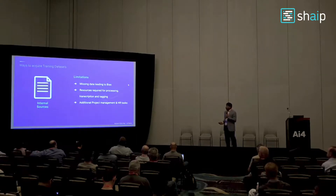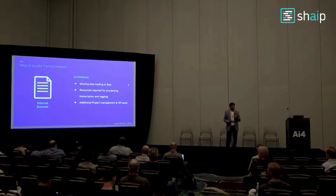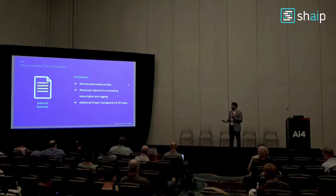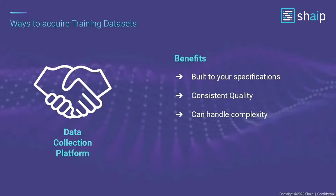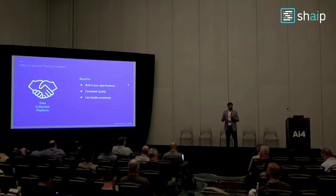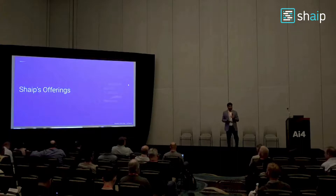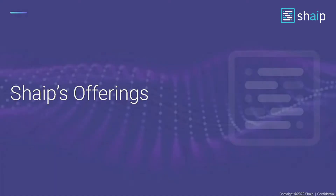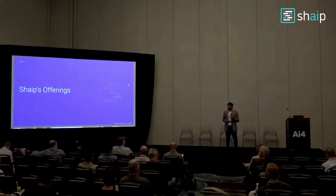On top of that, using internal data requires resources to process, transcribe, and tag it — additional project managers, HR people, and annotators. The third way to acquire training data is through a custom data collection platform, where you define your specific needs for a niche use case. It's built to your specifications, ensures consistent quality, handles complexity, and allows you to start small and scale up. We favor this third solution — a custom data collection platform is the answer to solving computer vision data collection challenges.